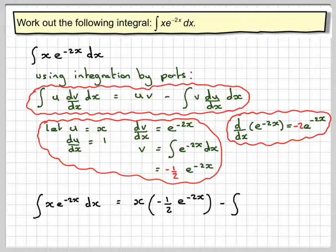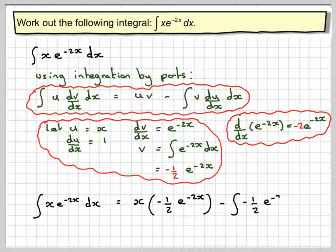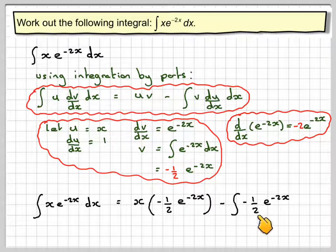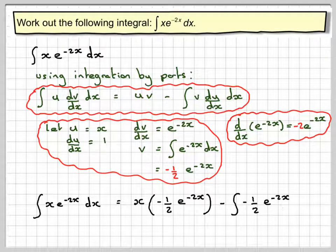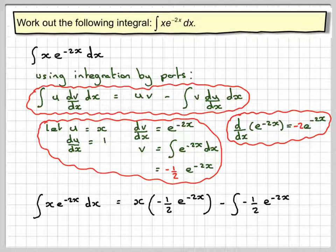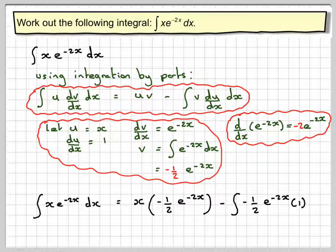...minus the integral of v, which is minus a half e to the minus 2x, times the differential of x, which is 1 dx.